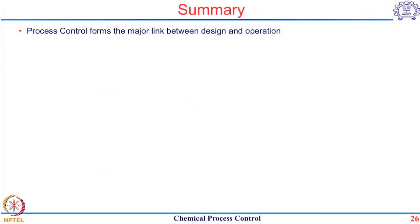To summarize what we have seen is that process control forms a major link between the design of the process which you have done based on steady state and the actual operation. Without this link of process control, your designed process will not be able to give you the result in a real field.